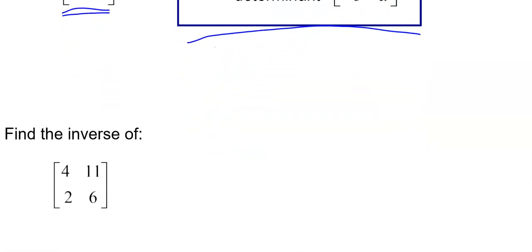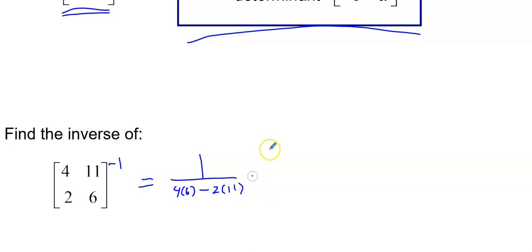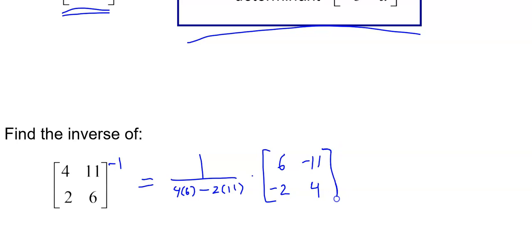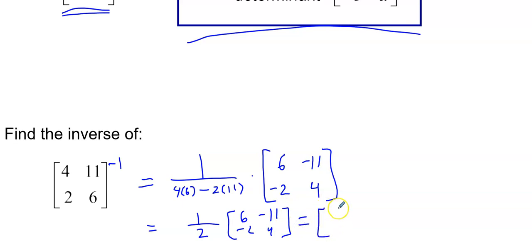Let's apply this formula. We're going to find the inverse of [4, 11; 2, 6]. The inverse is 1 over the determinant — which is 4 times 6 minus 2 times 11, that's 24 minus 22, which is 2 — so one half, times the matrix [6, negative 11; negative 2, 4]. Multiplying through: 6 times one half is 3, giving us negative eleven halves, negative 1, and 2.